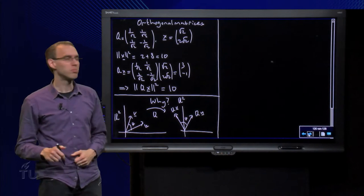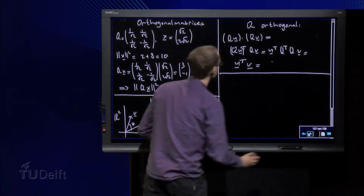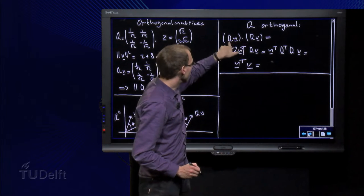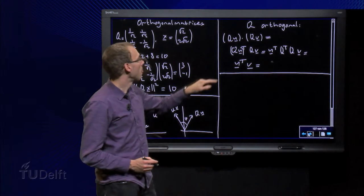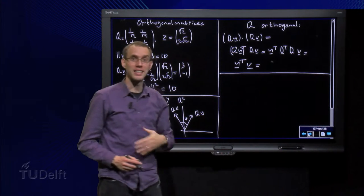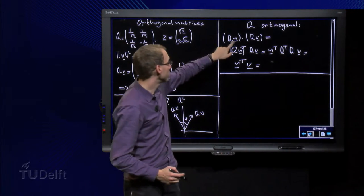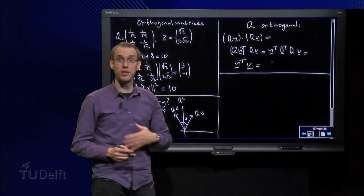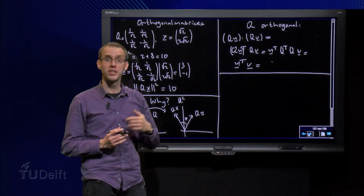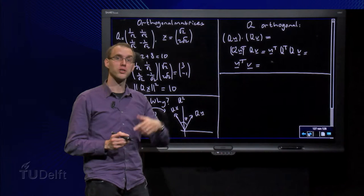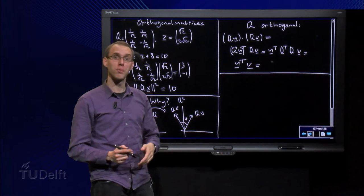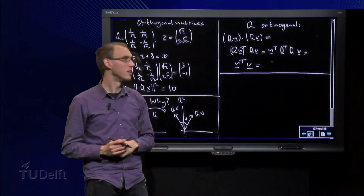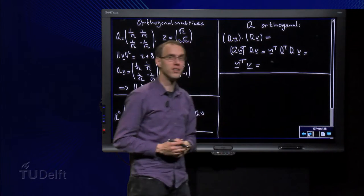Suppose we compute the inner product between Q times u and Q times v. We know we can rewrite the inner product between any two vectors as the transpose of the first vector times the second vector. And then we know that the product of the transpose - AB transpose equals B transpose times A transpose - so we have to reverse the order. So we get U transpose times Q transpose times Q times v.